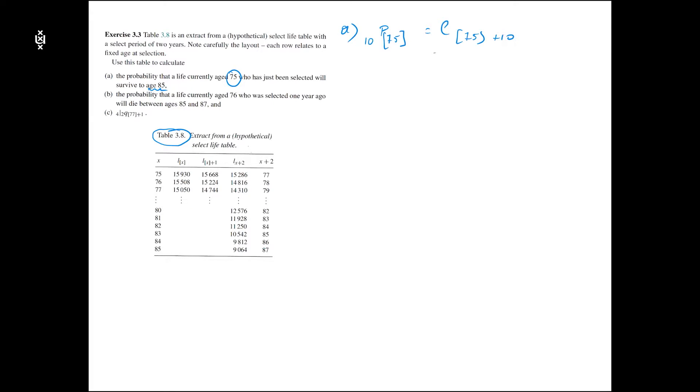I divide by the number of people we have at the start of our calculations. Because the select period is two years, L75 plus 10 is just equal to L85.